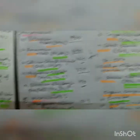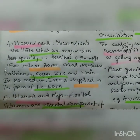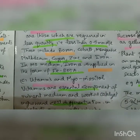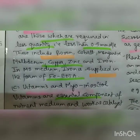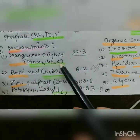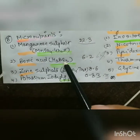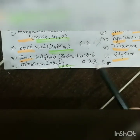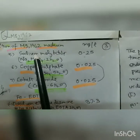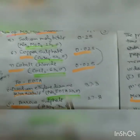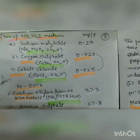Micronutrients are required in less than 0.5 millimolar per liter and include boron, cobalt, manganese, molybdenum, copper, zinc, and iron. The MS micronutrient concentrations are: manganese sulfate (MnSO₄·4H₂O) 22.3 mg/L, boric acid (H₃BO₃) 6.2 mg/L, zinc sulfate (ZnSO₄·7H₂O) 8.6 mg/L, potassium iodide (KI) 0.83 mg/L, sodium molybdate 0.25 mg/L, copper sulfate (CuSO₄·5H₂O) 0.025 mg/L, and cobalt chloride 0.025 mg/L.